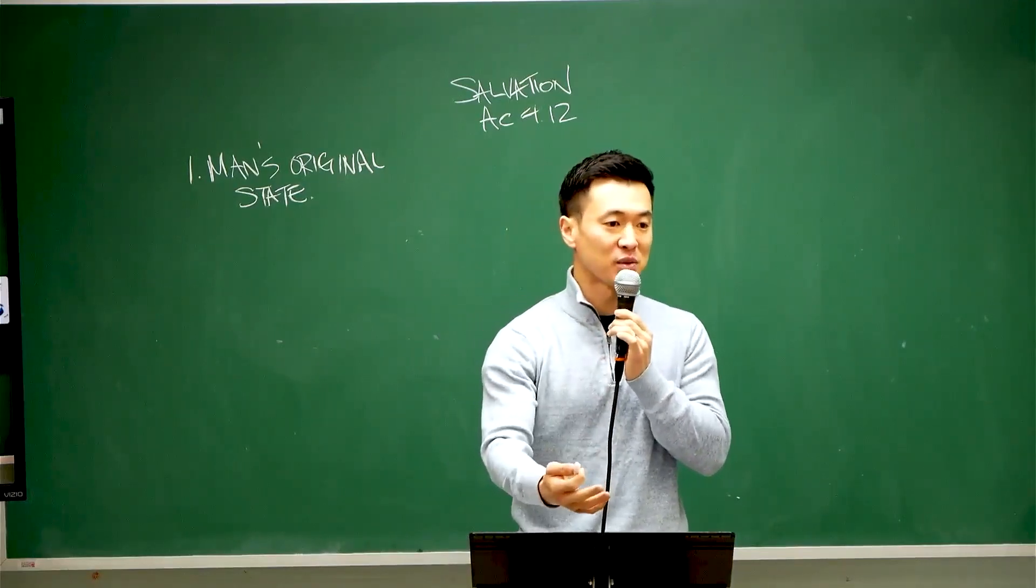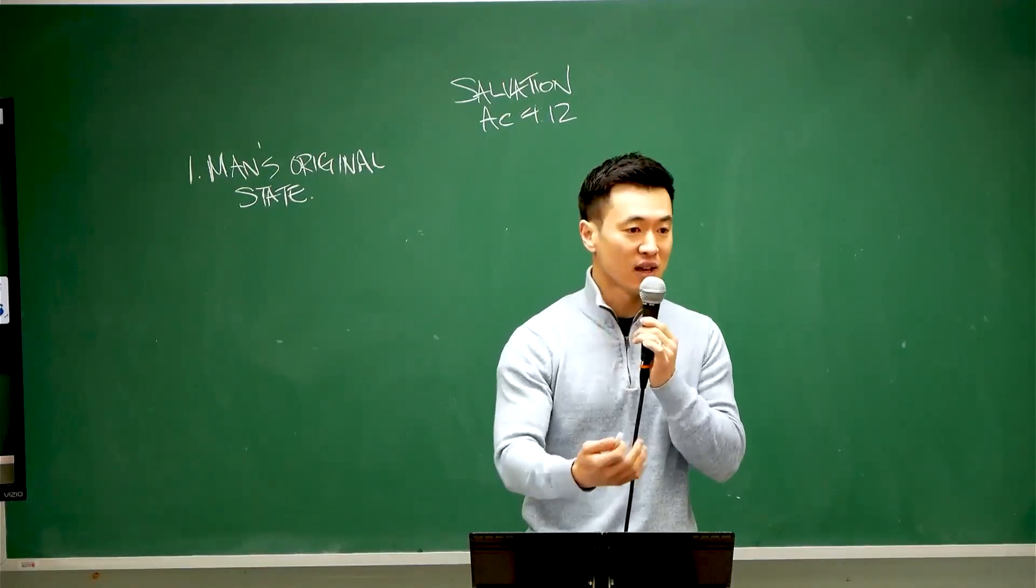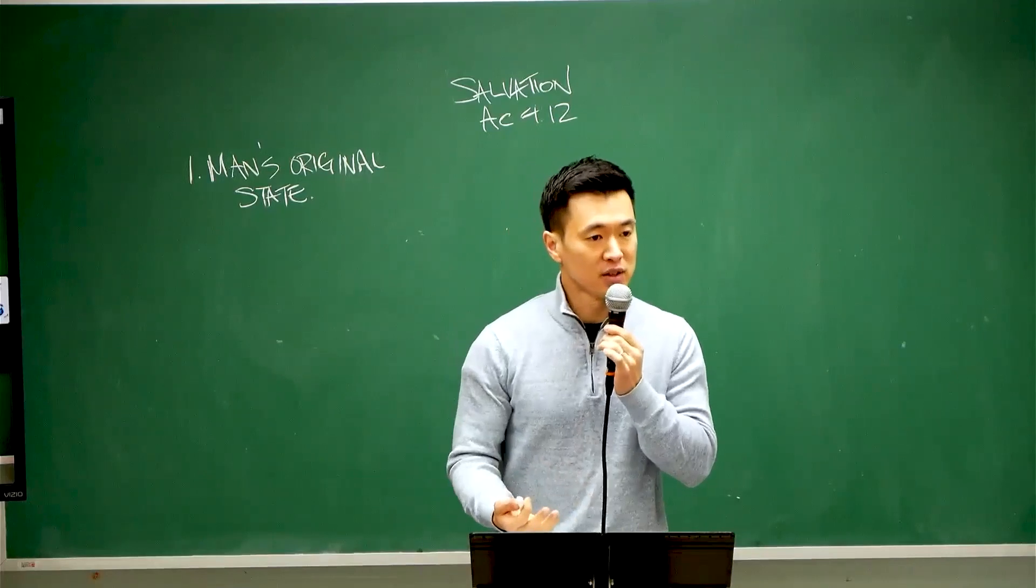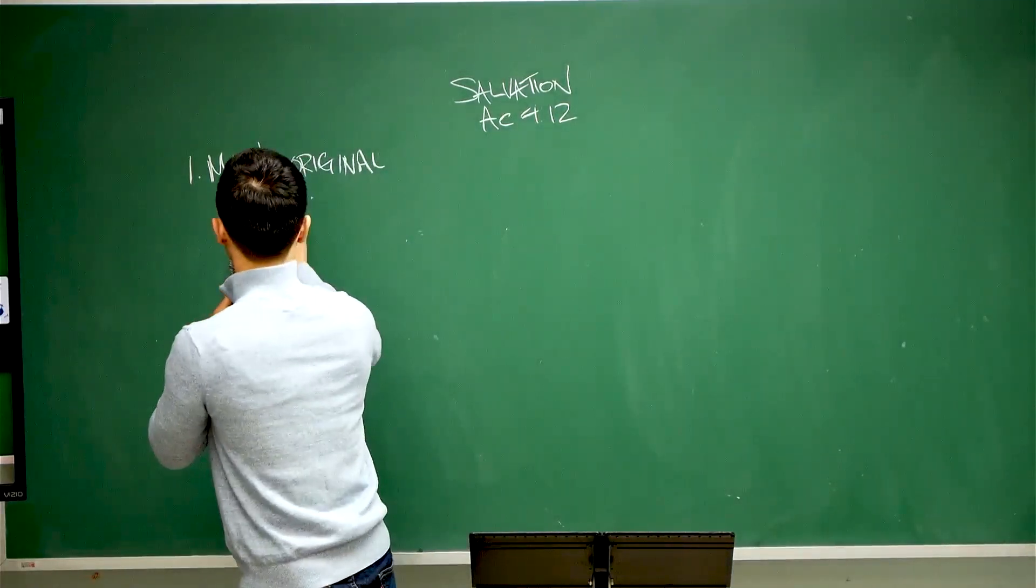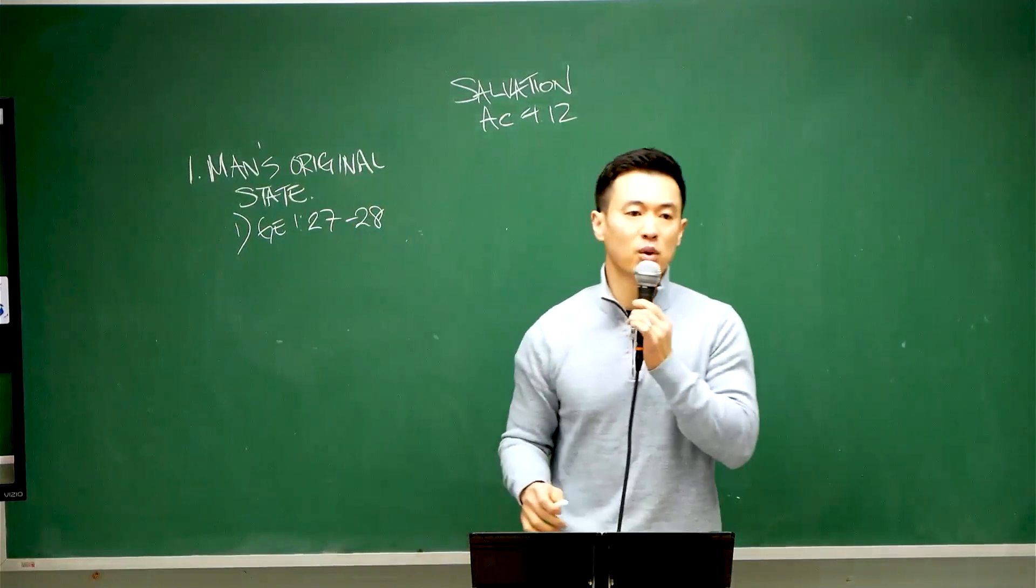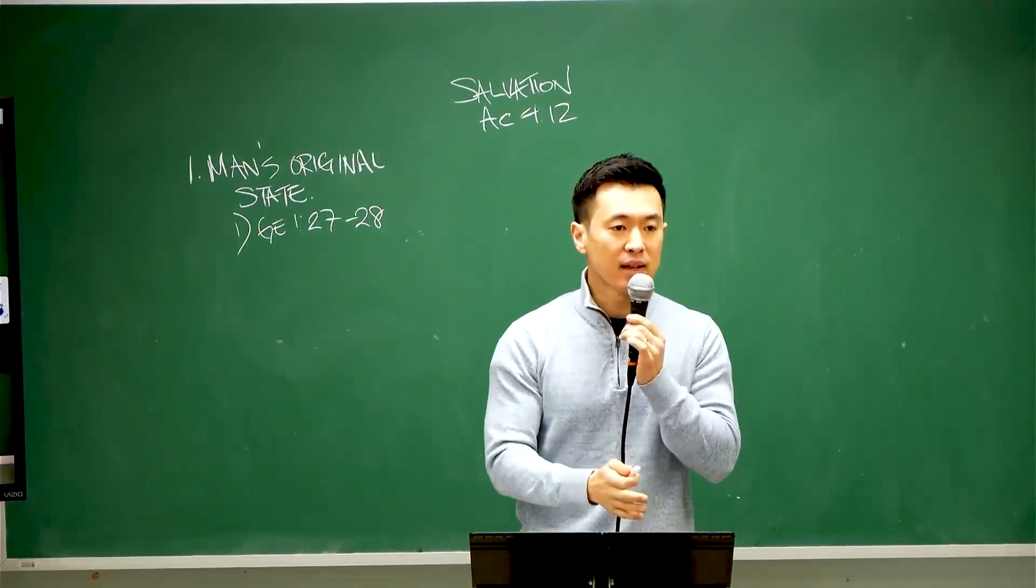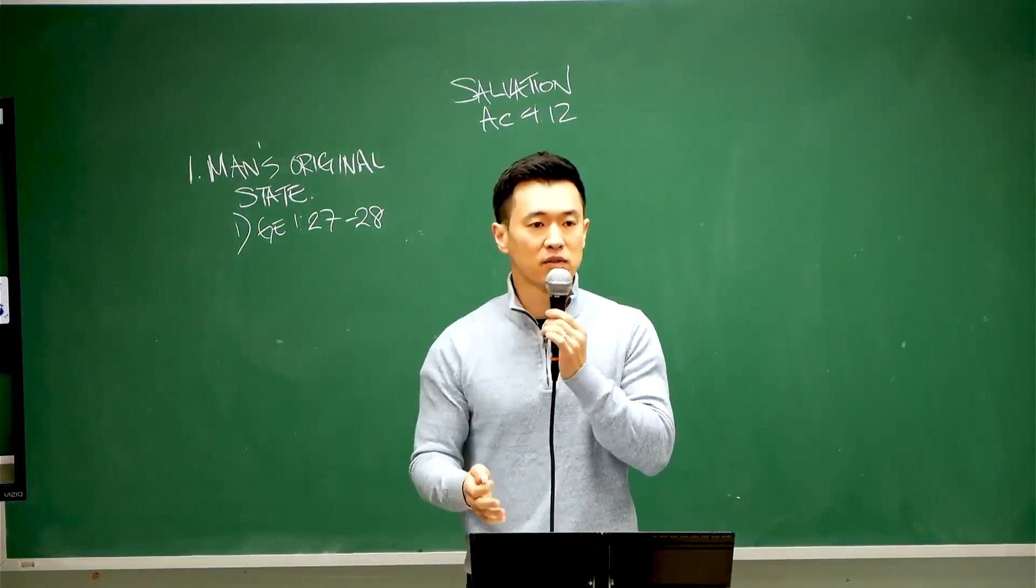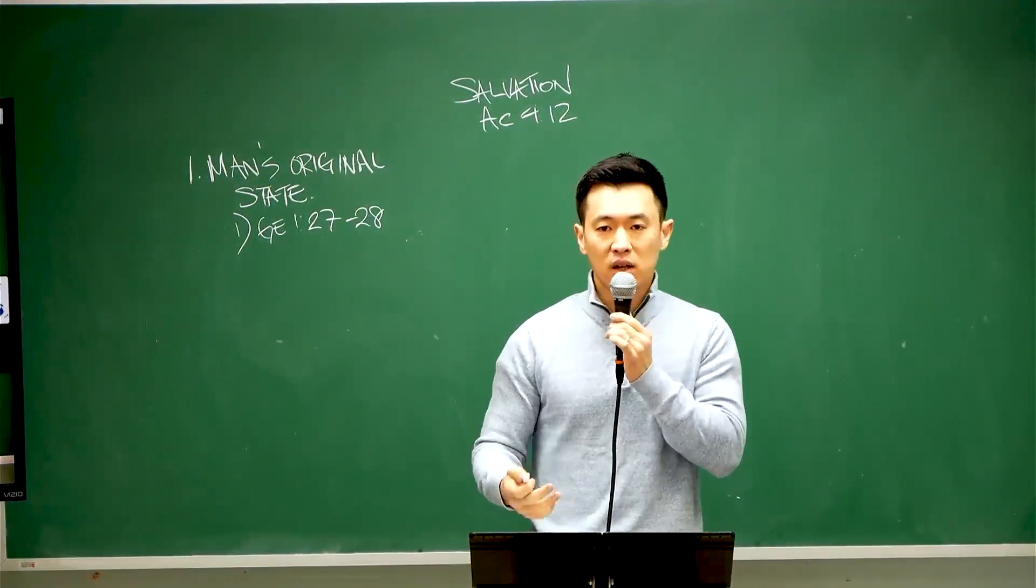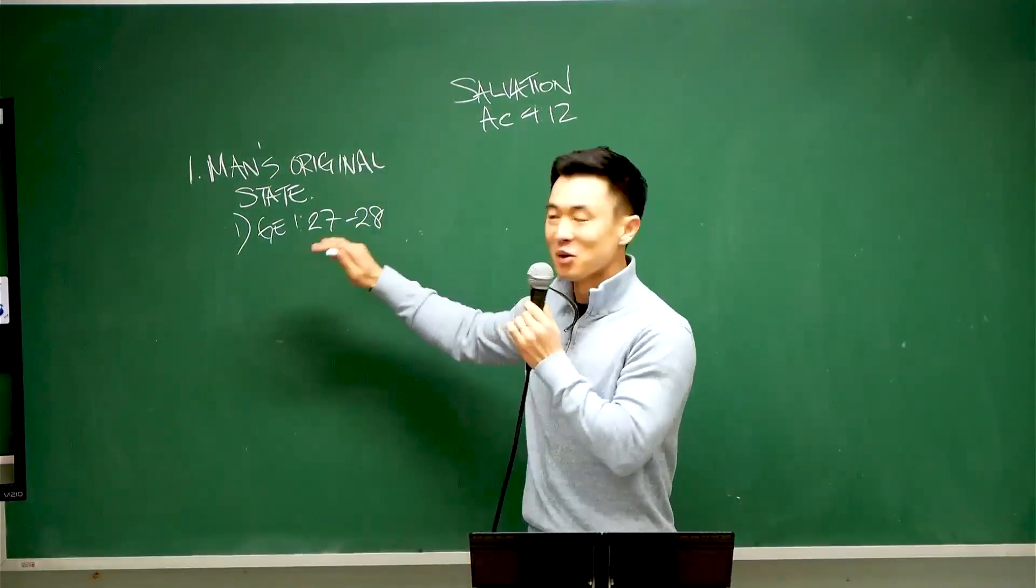So, the very first thing that you and I need to realize when it comes to talking about the blessing of salvation, we have to understand man's original state. Every time I go and share the gospel of Jesus Christ to people, I always talk about how God created mankind. It's really important for us to let them know how God created everything. So, I start out with the fact that God created the whole universe. God created everything that you and I see. He said it with his words. That's why if you look at Genesis chapter 1, it says, God said, God said, God said. So, everything that you and I see, he said it and it was made. But when it comes to mankind, we were created differently.